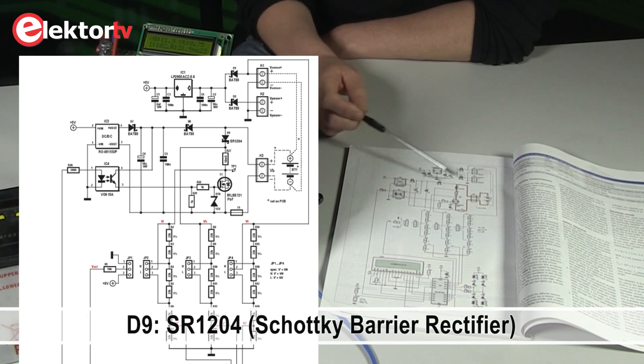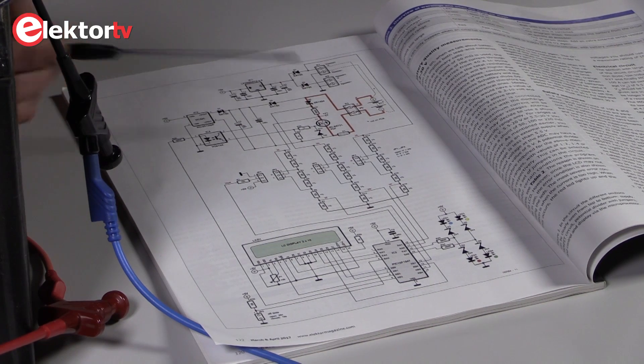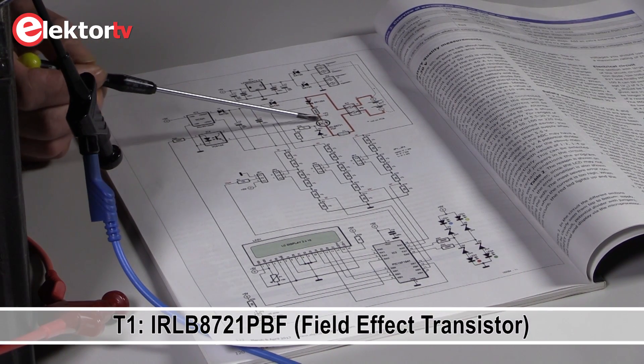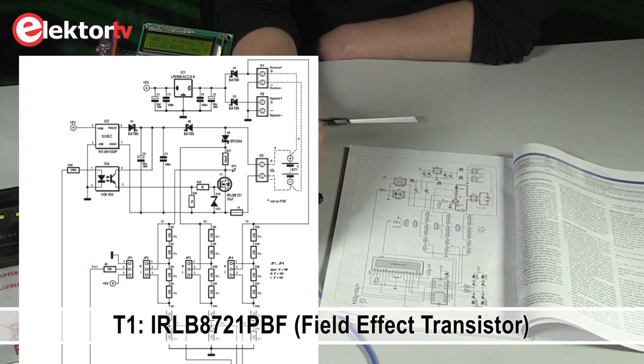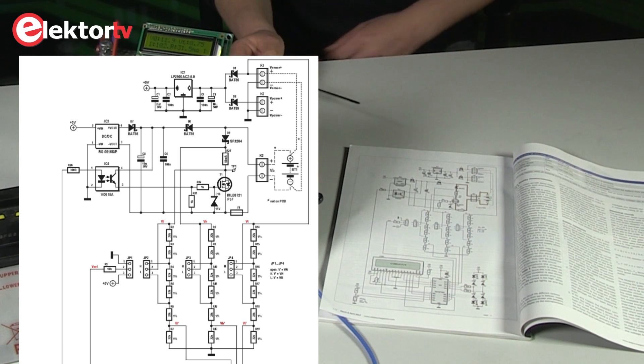There's a diode for reverse polarity protection. This is the shunt resistor itself. A field effect transistor that is pulsed to get the large current from the battery and a fuse to protect the circuit.